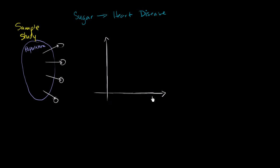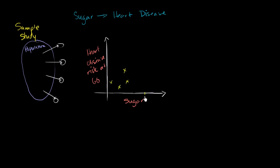And what you get is something like this. On the horizontal axis, you plot sugar consumption, and on the vertical axis, you plot heart disease risk — their level of heart disease risk at age 60. You plot points and find a scatter plot that looks something like this. Each of these points represents a person — so this is someone who consumed, let's say, 200 grams of sugar per day and is now at high heart disease risk at age 60. But maybe this is someone at low heart disease risk at age 60 even though they consumed a lot of sugar every day. And so we just keep plotting all of these points.